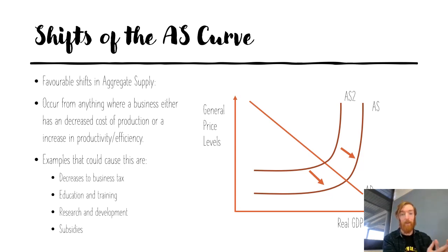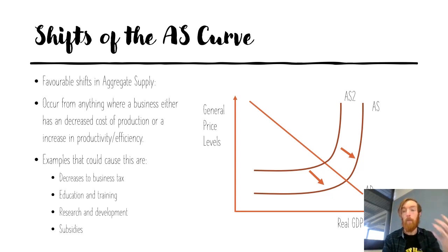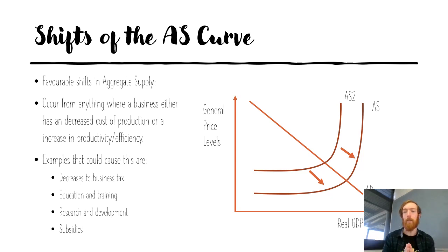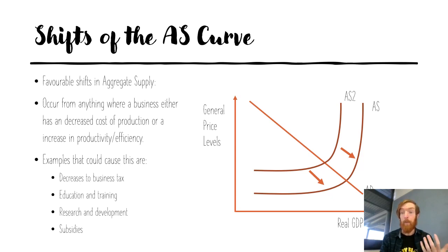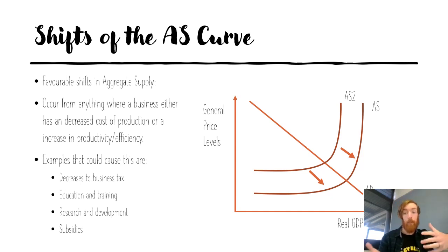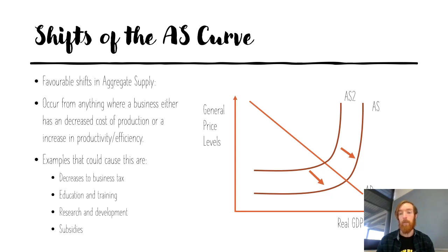Research and development, if successful, leads to more production at a lower price, which is great for a business — they're able to produce more, great for aggregate supply, therefore a favorable shift to the right. Subsidies are another way: the government incentivizes businesses to produce a certain good or service by giving them some kind of payment. That reduces businesses' cost of production and therefore allows them to produce more at a lower price — favorable for aggregate supply.